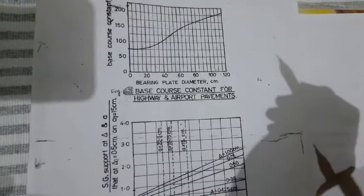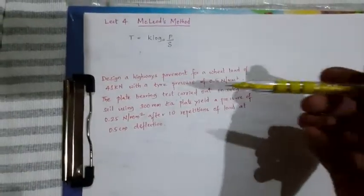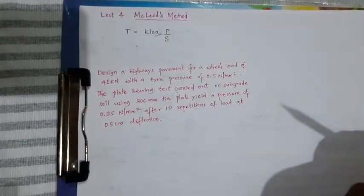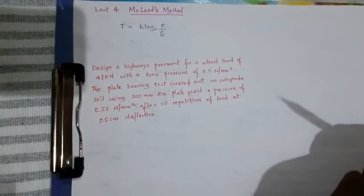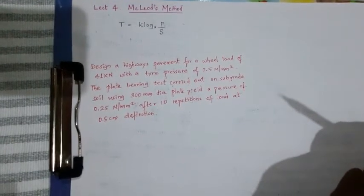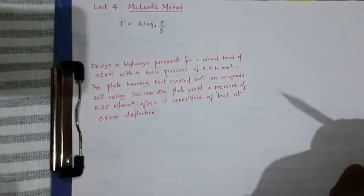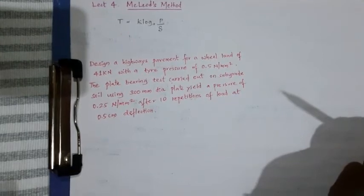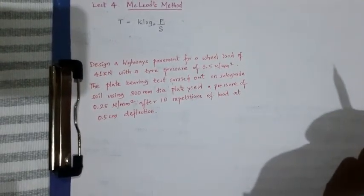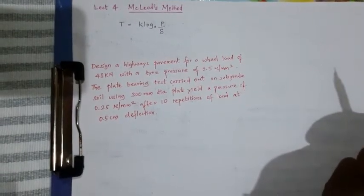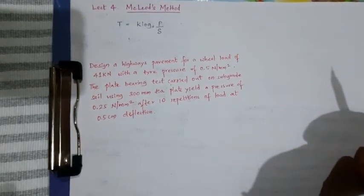We look into one of the problems, try to understand the design method here. Let us take down the problem. Design a highway pavement for a wheel load of 41 kN with a tire pressure of 0.5 N per mm square. The plate bearing test is carried out on a subgrade soil, using 300 mm dia, that is 30 cm plate, yielding a pressure of 0.25 N per mm square after 10 repetitions of load at 0.5 cm deflections.